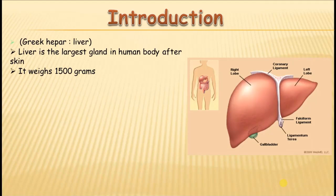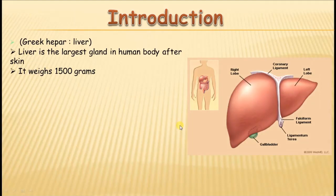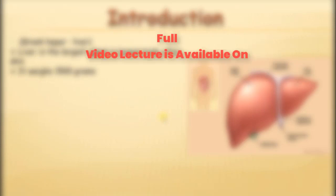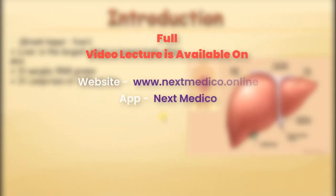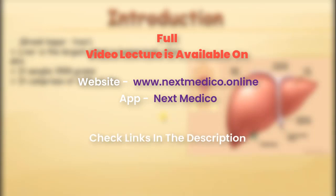Now since it is the largest gland in the human body, it weighs around 1.5 kilograms in a healthy adult human being. That is the approximate weight of the liver and it comprises around 2.5 percent of the total body weight — so it is actually 1/40th of our body weight.